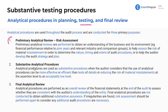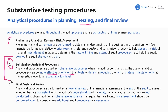The three purposes are: preliminary (covered in the analytical procedures lesson), substantive analytical procedures, and final analytical review. Substantive analytical procedures are used when the auditor considers them more effective or efficient than tests of details in reducing the risk of material misstatements at the assertion level to an acceptably low level. Final analytical review procedures are performed as part of an overall review of the financial statements at the end of the audit to assess consistency with the auditor's understanding of the entity — they are not conducted to obtain additional substantive assurance.